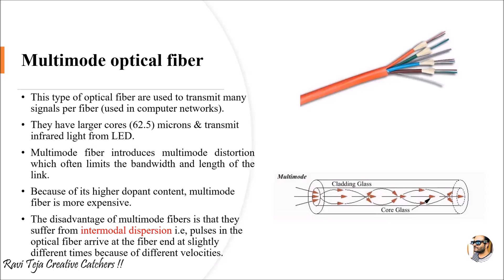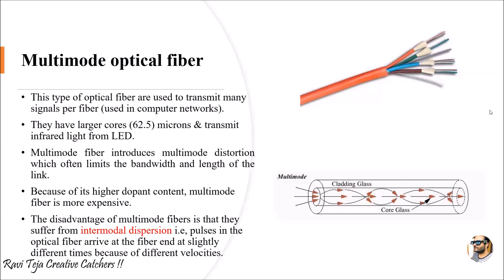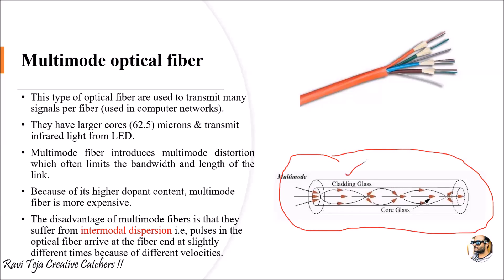Multi-mode optical fiber is a more complex concept, where multiple signals with different frequencies can be transmitted through a single optical fiber. In a real-time image of an optical fiber cross-section, you can see multiple optical cables embedded in a single wire, and multiple signals entering through the cladding and core.